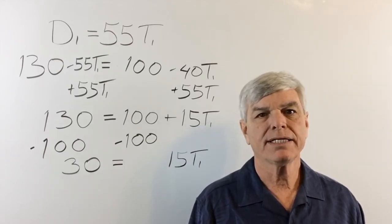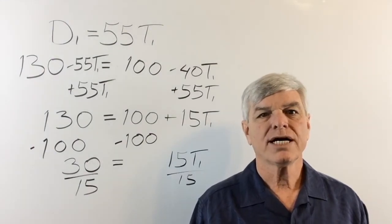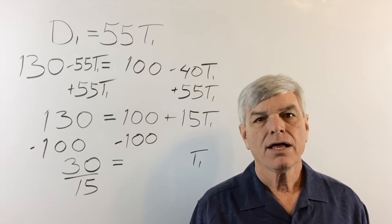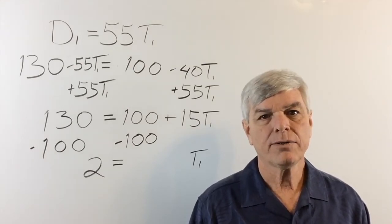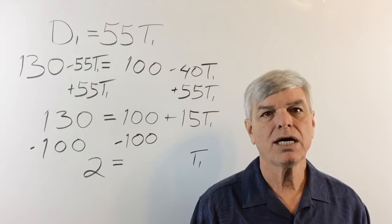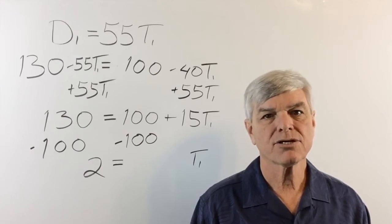There we go. Getting simpler all the time. And let's divide both sides by 15. Which isolates T1. 30 over 15 is 2. That would be 2 hours. So T1 equals 2 hours. Let's go back to the grid.